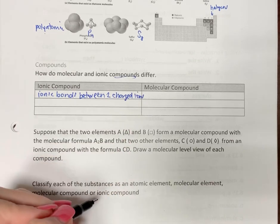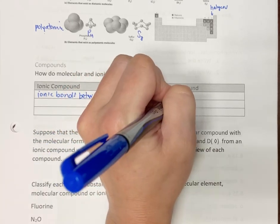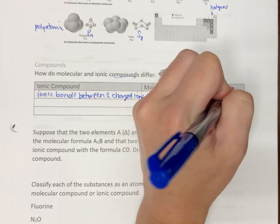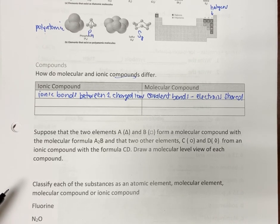In a molecular compound, you have what we call covalent bonds. And here, remember, the electrons are shared. In ionic bonds, the electrons are transferred.